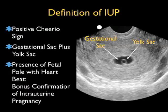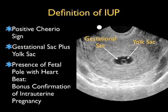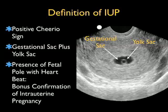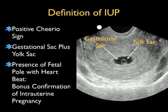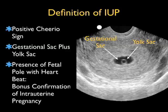The findings we define as indicative of an intrauterine pregnancy for an emergency physician sonographer are the presence of a gestational sac with a yolk sac inside. The yolk sac has a circular appearance that we call the positive cheerio sign. Gestational sac plus yolk sac is indicative of intrauterine pregnancy. Bonus points are given if you also see a fetal pole with a heartbeat for confirmation.